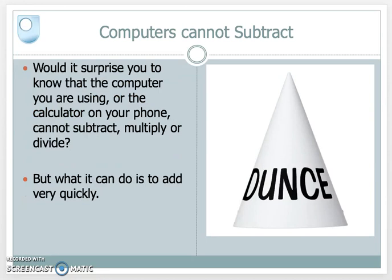Would it surprise you to know that when it comes to calculations, a computer cannot subtract? Basically anything you're using — your phone as a calculator or the computer in front of you — you think you're subtracting, you think you are dividing. But in actual fact all your computer is doing is adding numbers together very, very quickly.